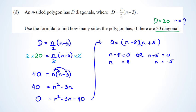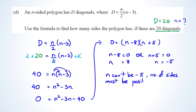You can't have negative 5 sides on a polygon — the number of sides must be positive. So N equals 8 sides. Making that connection to reject the negative answer and state N equals 8 is what gets you an excellence. Having the factorized equation with N equals 8 or negative 5 is a merit.